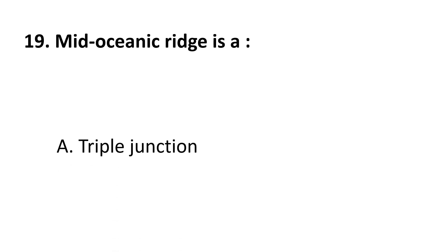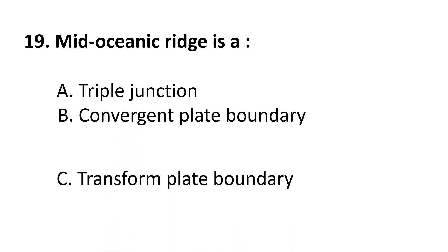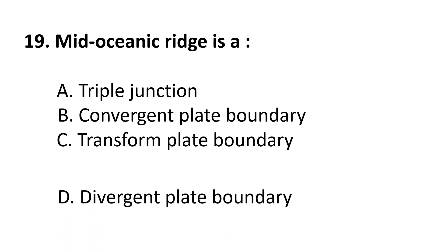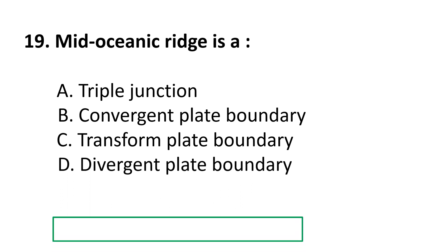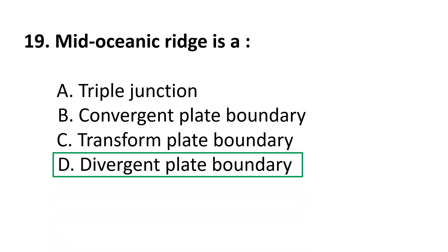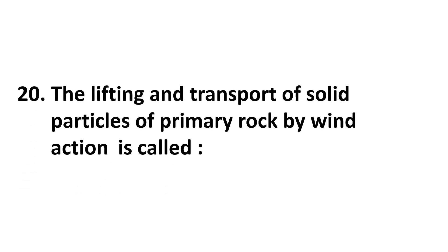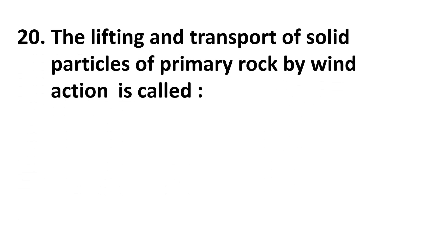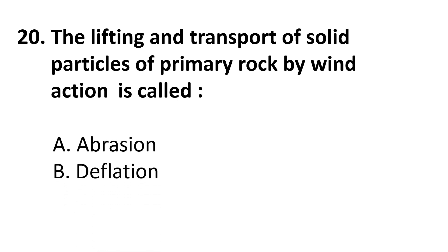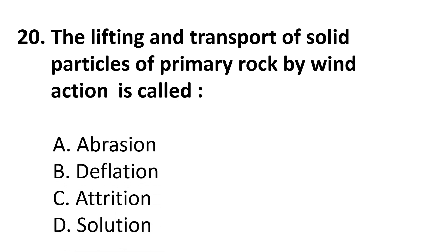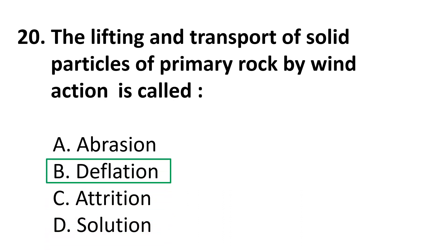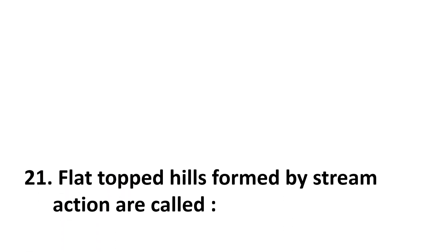Question 19: Mid-oceanic ridge is — A) A triple junction, B) Convergent plate boundary, C) Transform plate boundary, D) Divergent plate boundary. The correct answer is D) Divergent plate boundary. Question 20: The lifting and transport of solid particles of primary rock by wind action is called — choices are: A) Abrasion, B) Deflation, C) Attrition, D) Dissolution. The correct answer is B) Deflation.